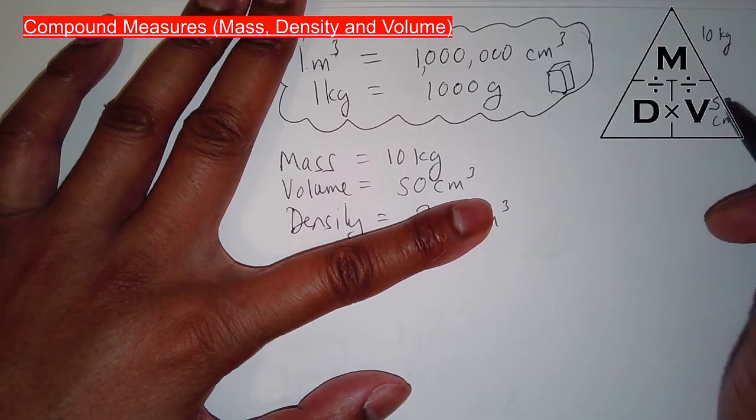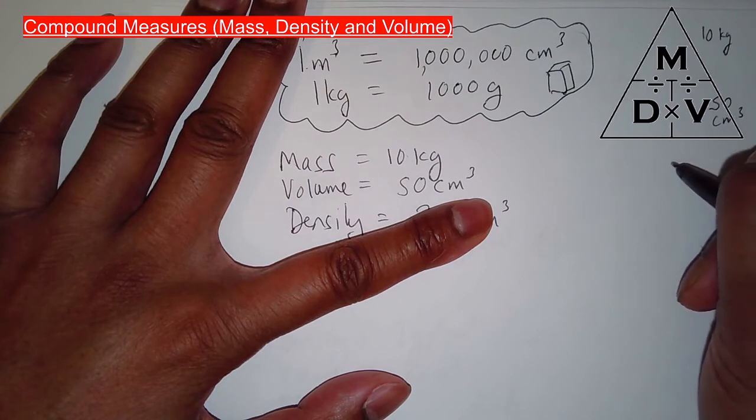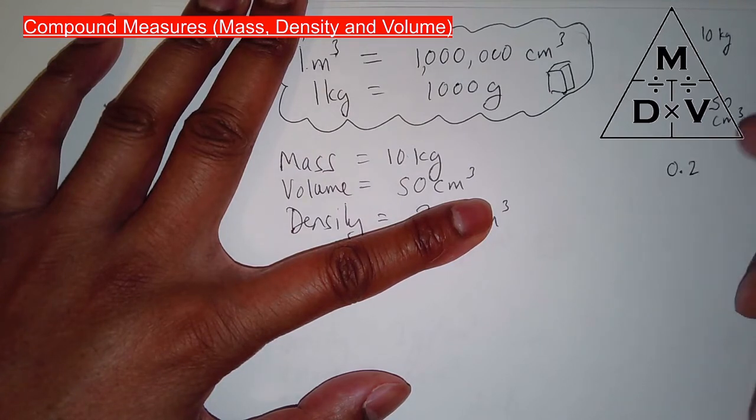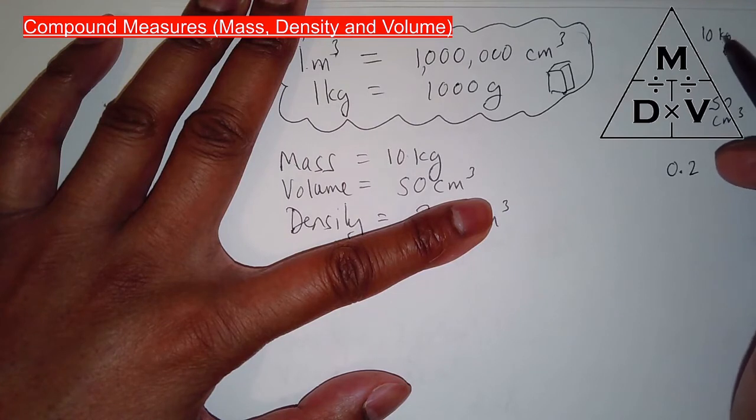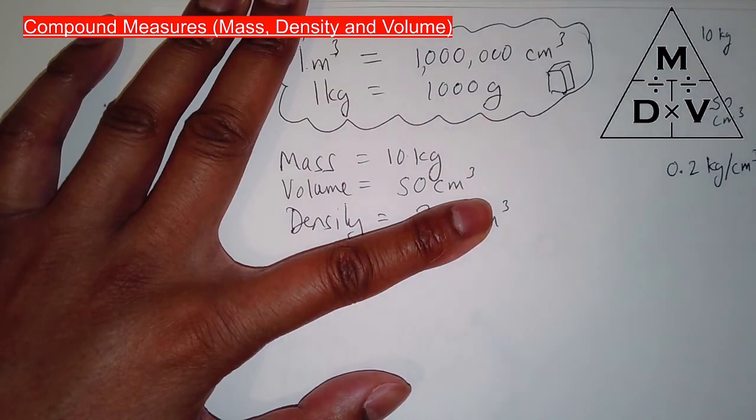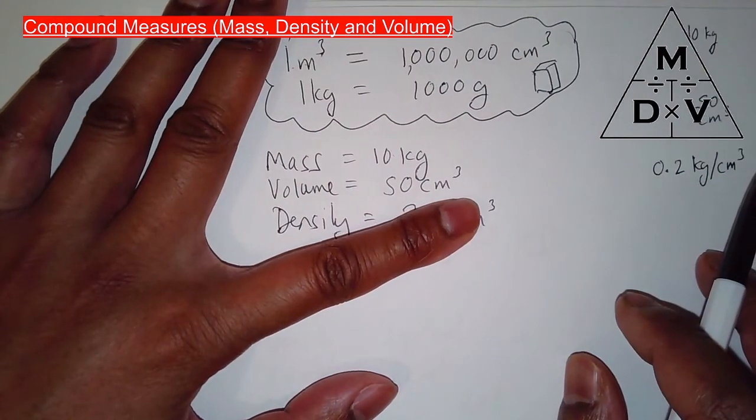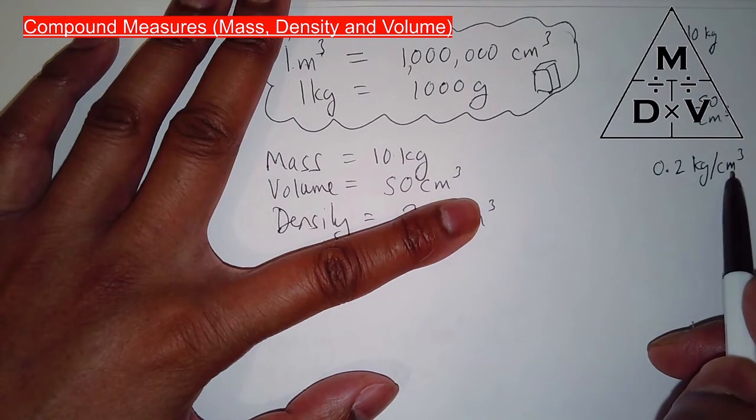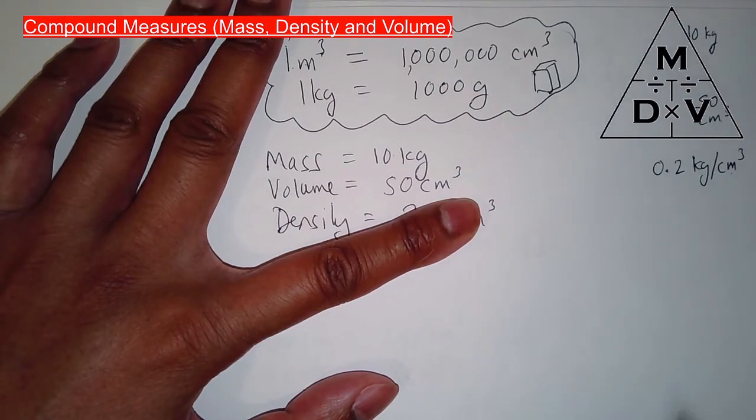10 divided by 50 gives you 0.2 kilograms. What's the units? It's kilograms per centimeter cubed. Kilograms per centimeter cubed. That is quite dense. So one little centimeter cubed of that substance would have a mass of 0.2 kilograms, 200 grams.